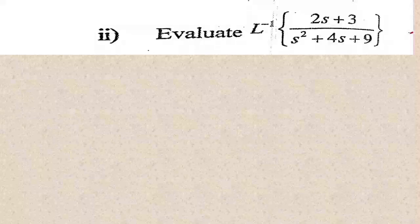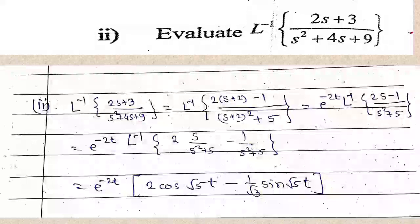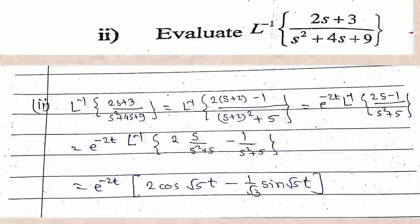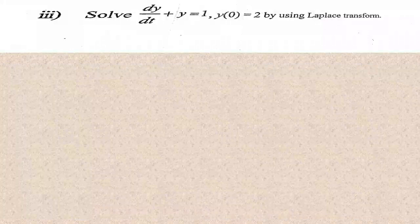Second: evaluate L⁻¹{(2s+3)/(s²+4s+9)}. Completing the square: L⁻¹{(2s+3)/(s²+4s+9)} = e^(-2t) L⁻¹{(2s-1)/(s²+5)} = e^(-2t) L⁻¹{2s/(s²+5) - 1/(s²+5)} = e^(-2t)[2cos(√5 t) - (1/√5)sin(√5 t)].